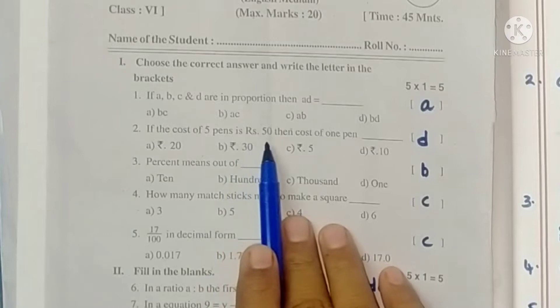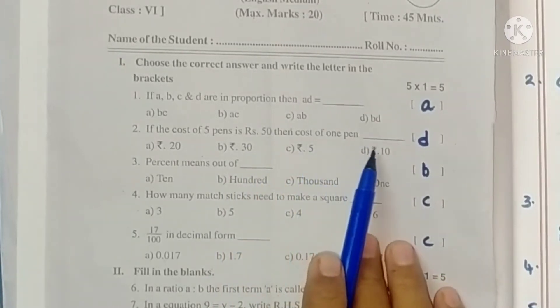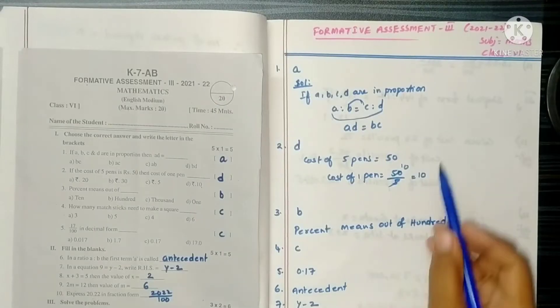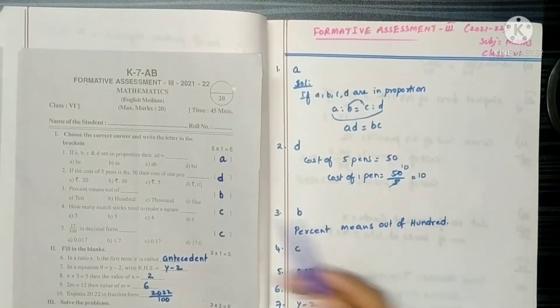Next, cost of 5 pens is Rs. 50, then cost of 1 pen. So one pen's cost we need to find out, so we do division. So it is 10, option D.